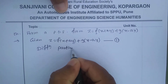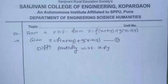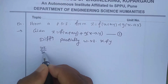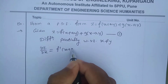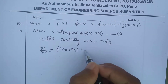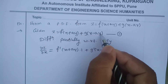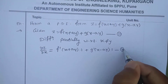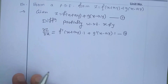Differentiating partially with respect to x: ∂z/∂x equals the derivative of f, which is f'(x + ay), times the derivative of (x + ay) with respect to x, which is 1, plus the derivative of g, which is g'(x - ay), times the derivative of (x - ay) with respect to x, which is also 1. This gives us equation number two.